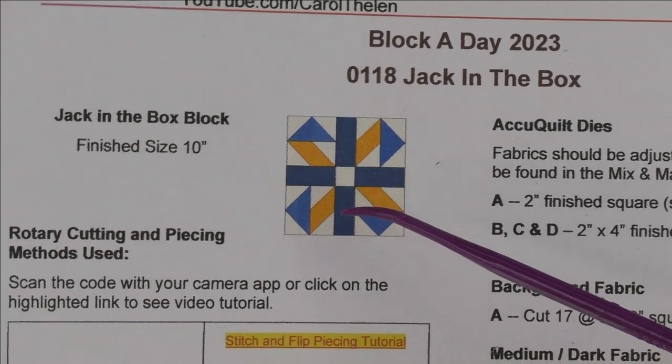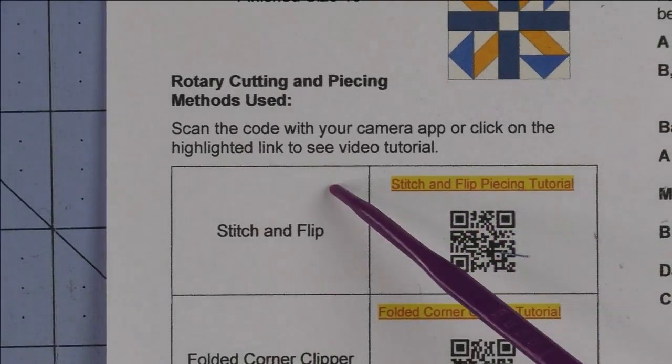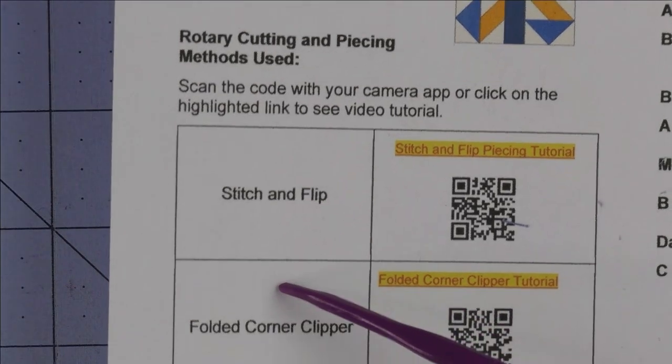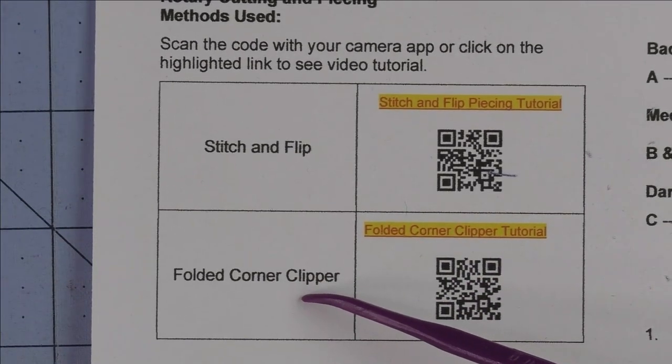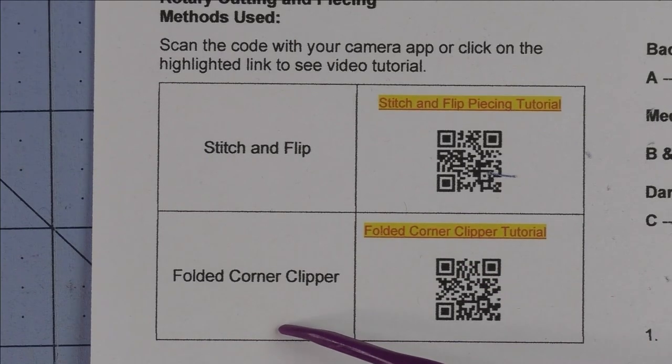The special techniques we're going to use for this are stitch and flip, or you can use the folded corner clipper or a similar tool if you have it for doing the stitch and flip, because we're going to do a lot of it in this block.